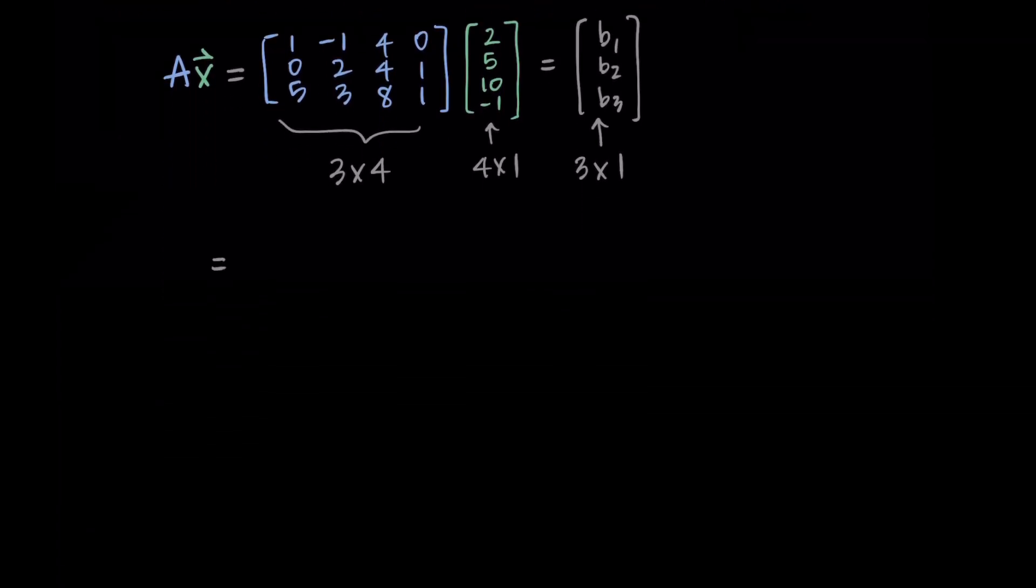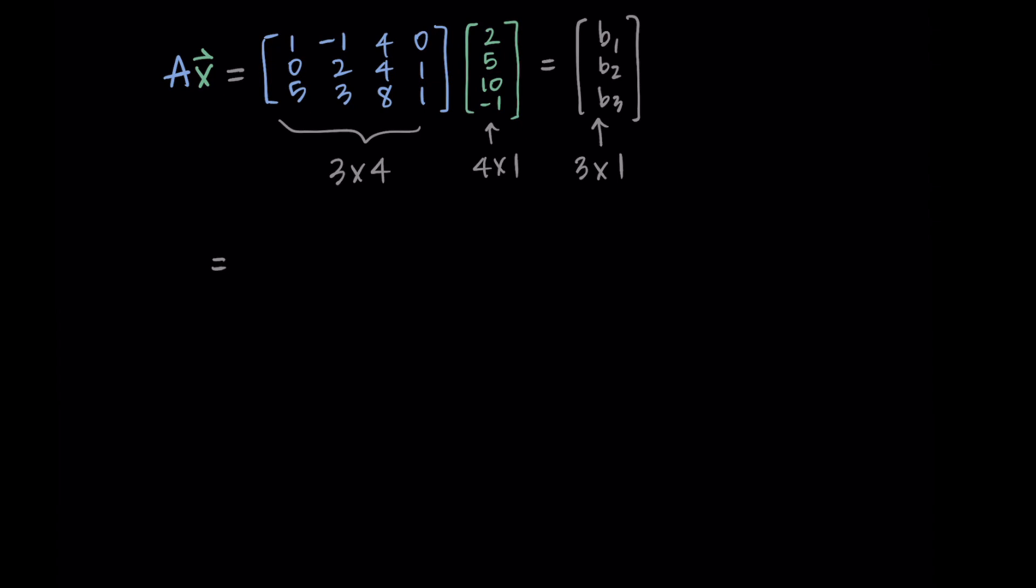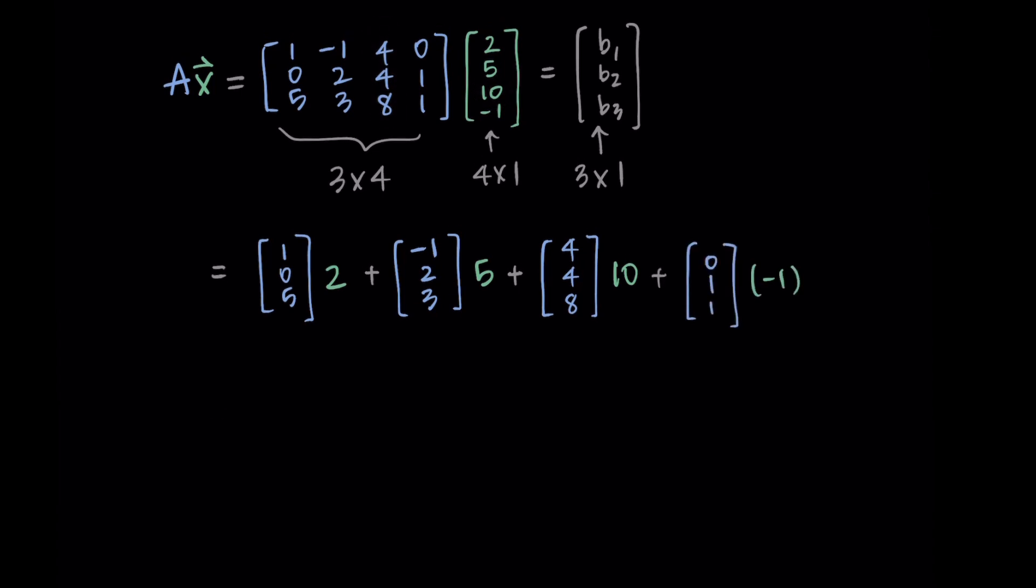Now the sort of long version to do this is that we take every column of A and multiply it by the corresponding component of x. So the first column gets multiplied by the first component. The second column gets multiplied by the second component, third column times the third component, and then fourth column times the fourth component. So I've written that out here. We have our columns times our elements of the vector x.